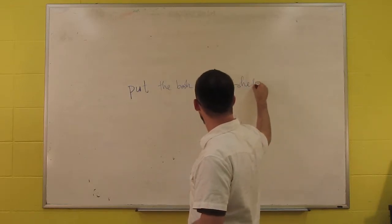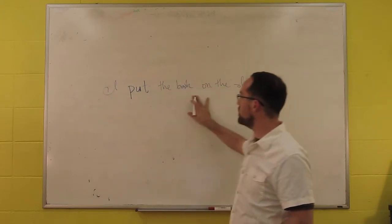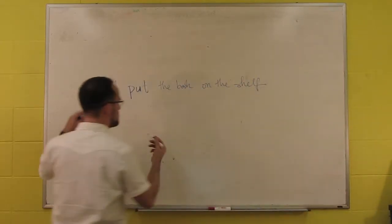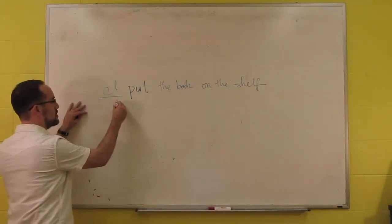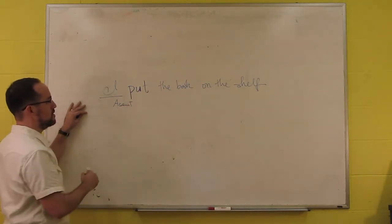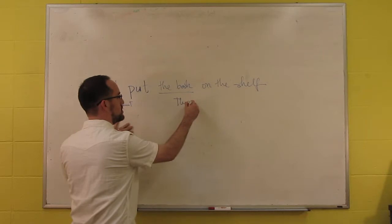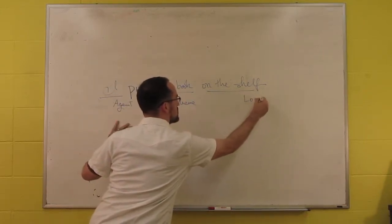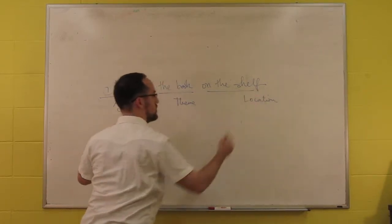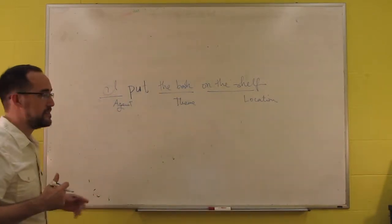So, you have to put the book on the shelf. So, it requires an agent, it requires a theme, the thing that's being put, and it also requires a location. Those are the three things put has to have.